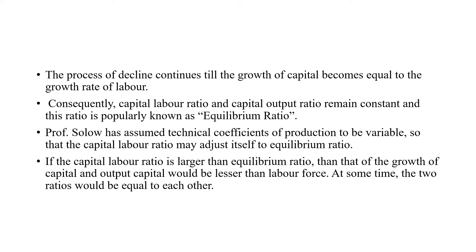Solow has assumed that the technical coefficients of production are variable, and that labor and capital are substitutable to an extent — though these are imperfect substitutes, they are substitutable. As against the Harrod-Domar model, where Harrod and Domar assume fixed factor proportions, here we have variable factor proportions, and the capital-labor ratio may adjust itself to the equilibrium ratio.